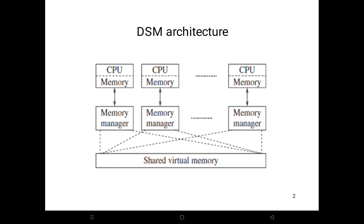What is the role of the memory mapping manager? The memory mapping manager maps local memory to shared virtual memory. When a process wants to access data in a shared address space, memory mapping maps the shared memory address to physical memory.